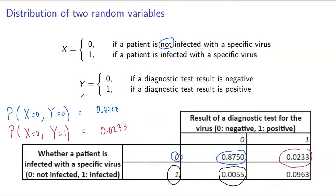Finally, X takes a value of 1 and Y takes a value of 1, meaning the patient is infected with the virus and the test result is also confirming that infection — a positive test result. That has a probability of 0.0963. So this table is the joint probability mass function, or joint PMF, of these two discrete random variables.